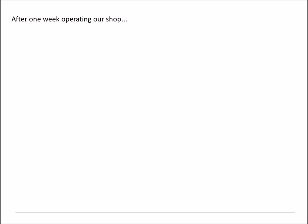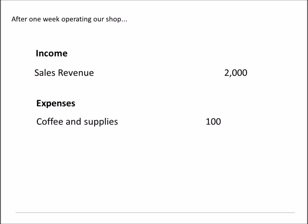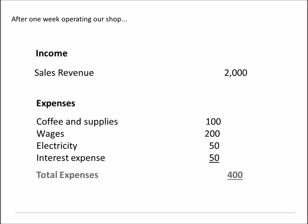Let's assume now that we've been operating our business and selling coffee for one week. We have income from coffee sales — we call this sales revenue. We'll assume we had $2,000 in sales. To enable us to generate that income, we had some expenses: the cost of the coffee and supplies used up was $100; we paid someone to help in the shop, $200; we used $50 worth of electricity which we haven't paid for yet but it's still counted as an expense because we've used it; and we owe $50 interest on our bank loan. Our total expenses are $400. The difference between our income and expenses is profit — in this case, we made a profit of $1,600.